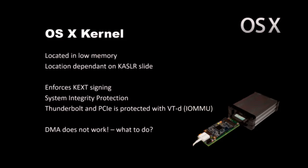We'll come to recommendations later on. But let's target the last missing operating system: OSX. OSX is just like Linux — the kernel is located in low physical memory, its location dependent on the kernel ASLR slide in 2 megabyte chunks. OSX nowadays enforces kernel extension signing. System Integrity Protection means users can't write to certain folders, and kernel extension signing means you can't load unsigned drivers. Old Macs today pretty much have Thunderbolt, but Thunderbolt is protected with VTD. OSX actually uses the IOMMU to protect itself from DMA attacks.